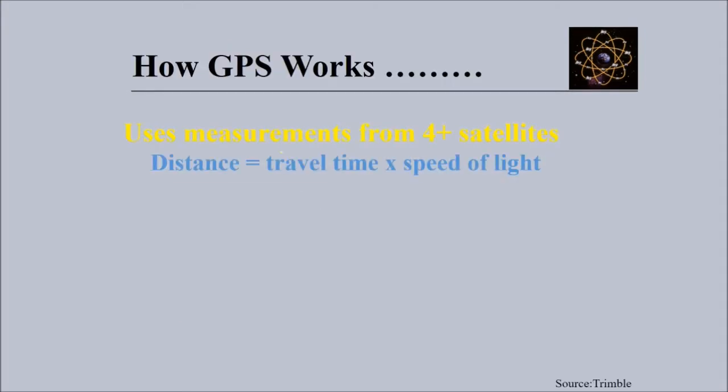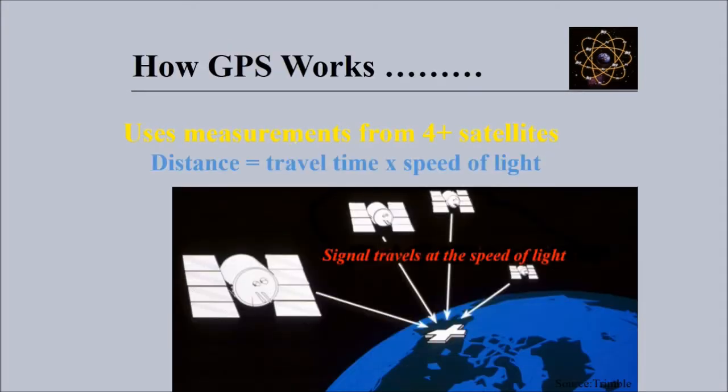How GPS works: it uses measurements from four or maybe more satellites. Simple formula - distance equals time times speed. The signal travels at the speed of light. The position of these satellites are known, and the time it takes from the satellite to the receiver is computed. We use the concept called trilateration.